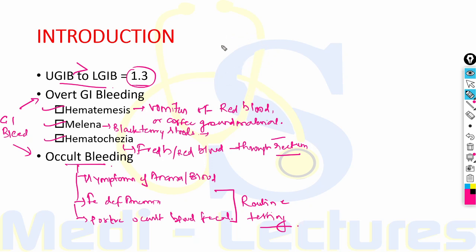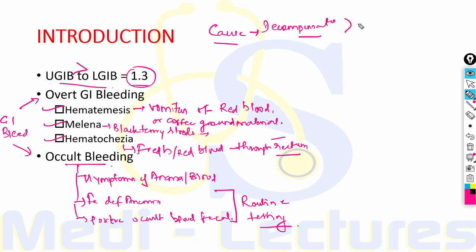The most common cause of death in GI bleeding is not exsanguination; it is decompensation of the underlying disease. Rarely does a patient die due to exsanguination itself.